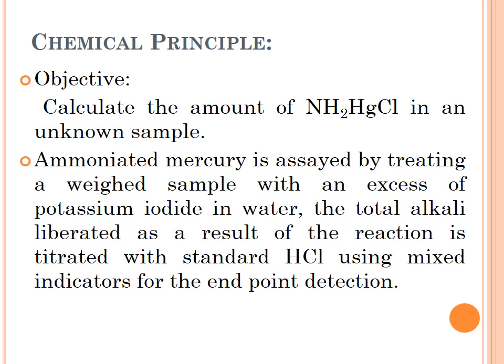The chemical principle we will use: ammoniated mercury is dissolved in water, then an alkaline solution is added. This is then titrated against a standard hydrochloric acid solution. For detection of the end point, a mixed indicator is used because an ordinary acid-base indicator cannot give a sharp end point. The mixed indicator used is the P-K (Prideaux-Knight) indicator, which gives a sharp end point.